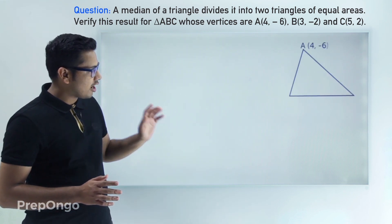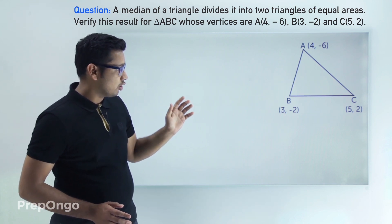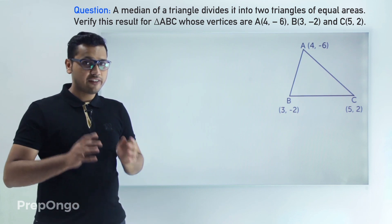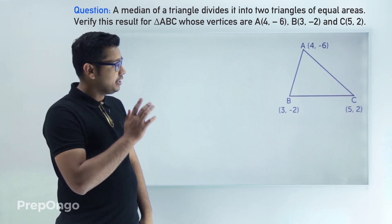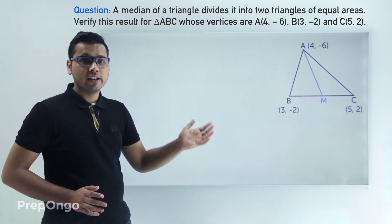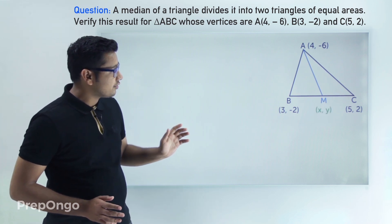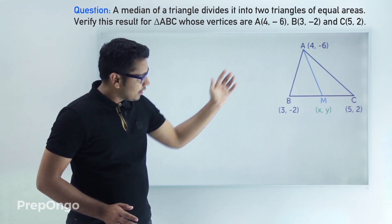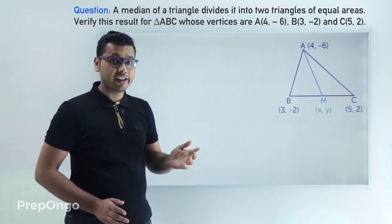The coordinate of A is (4, -6), B is (3, -2), and C is (5, 2). We have to find out whether the median — let's call it M with coordinates (x, y) — is dividing triangle ABC into two triangles of equal areas.